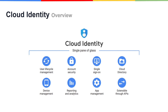Cloud Identity is a unified solution for your business's identity needs. It protects company data using the beyond-core security model and Google Threat Intelligence signals. Cloud Identity gives people simple, one-click access to the applications they need so they can work from anywhere on any device. This means employees can focus on their work.